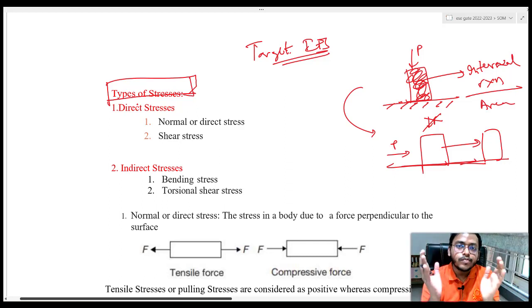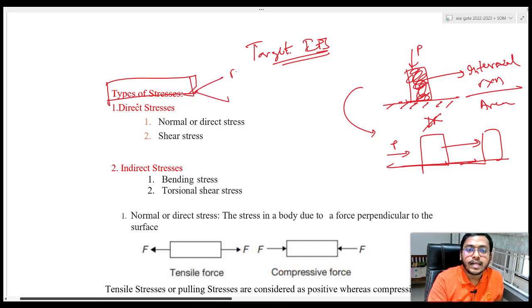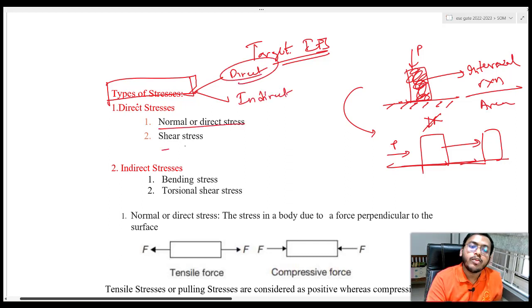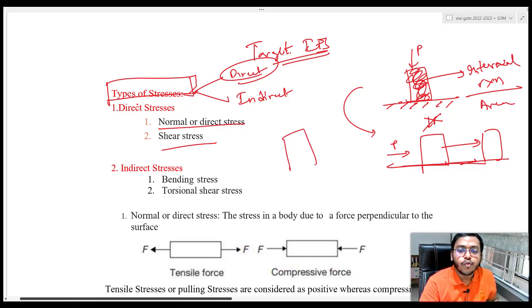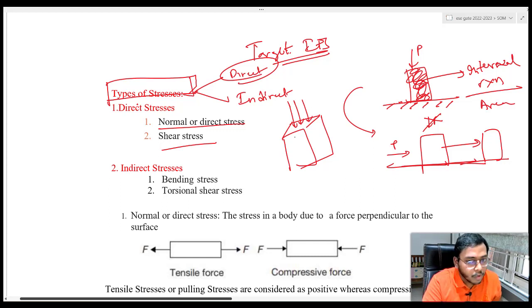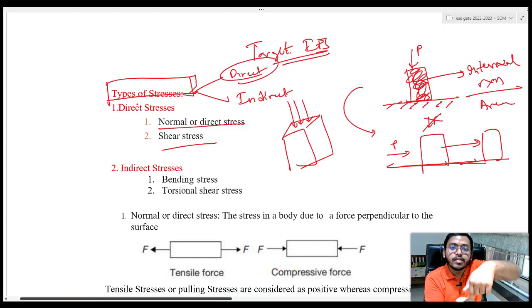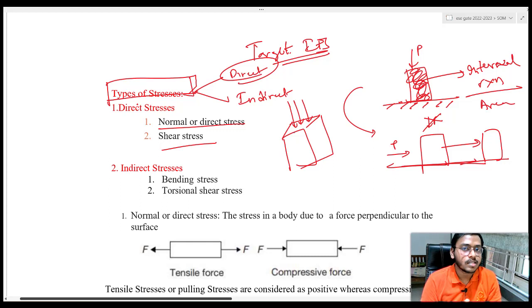Now let us see what are the various types of stresses we have. First, we have direct stresses and indirect stresses. Coming to direct stresses, we have normal stress and shear stress. If the force is acting perpendicular to the surface on your body — as I showed on the eraser — we are calling it as normal force, normal stress, or direct stress.